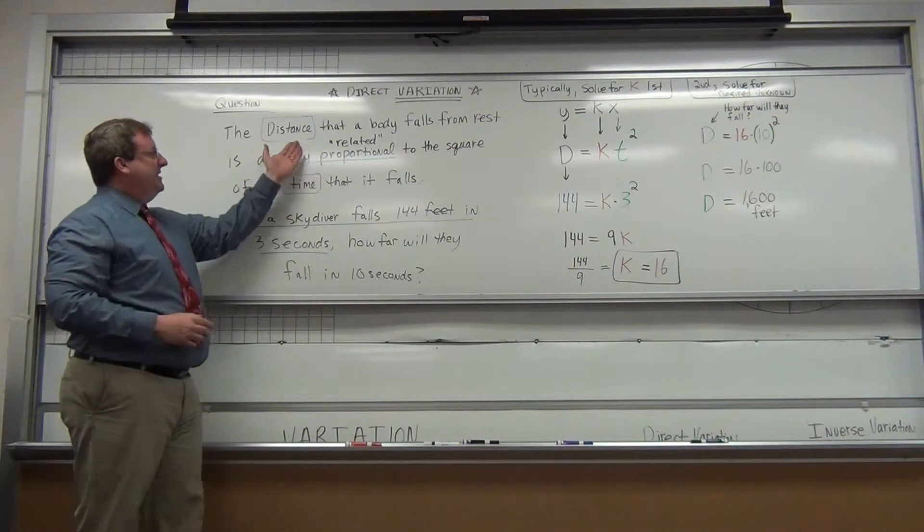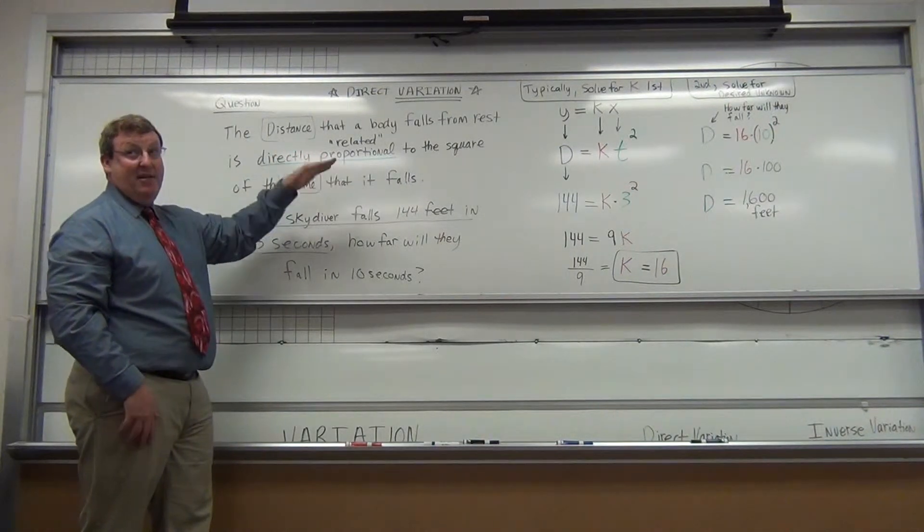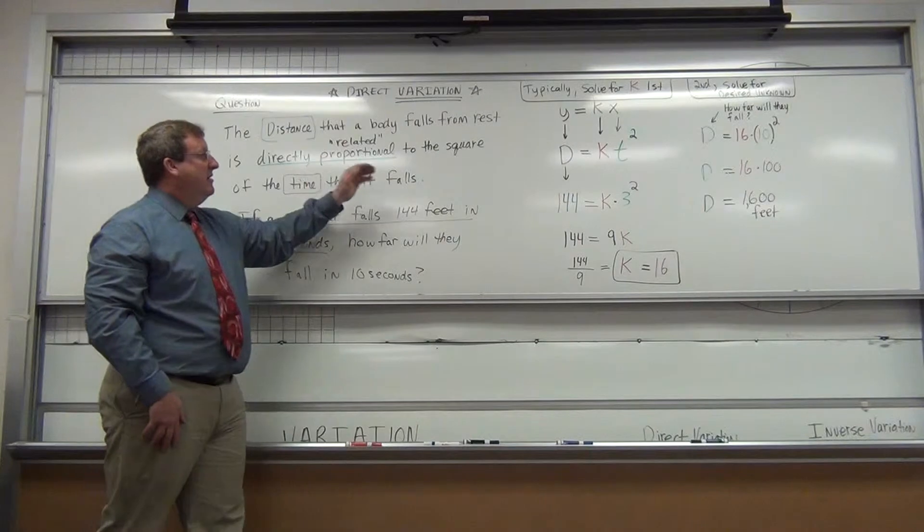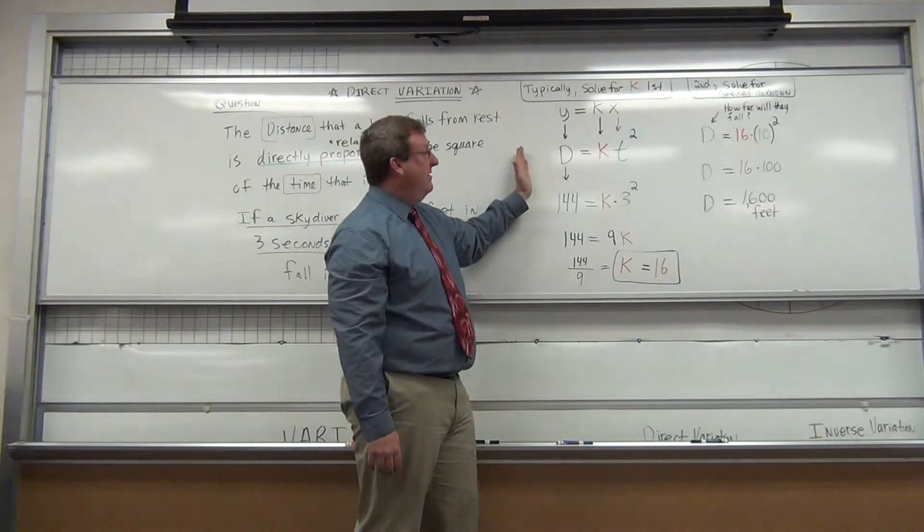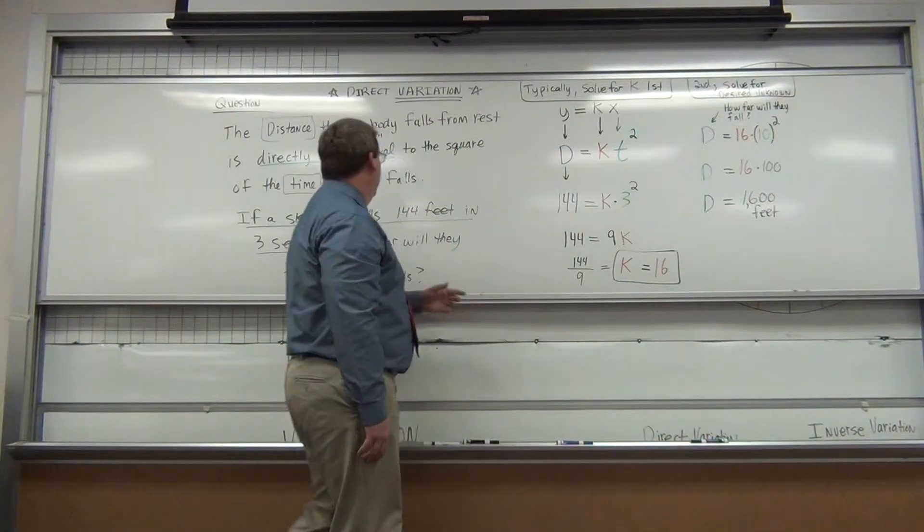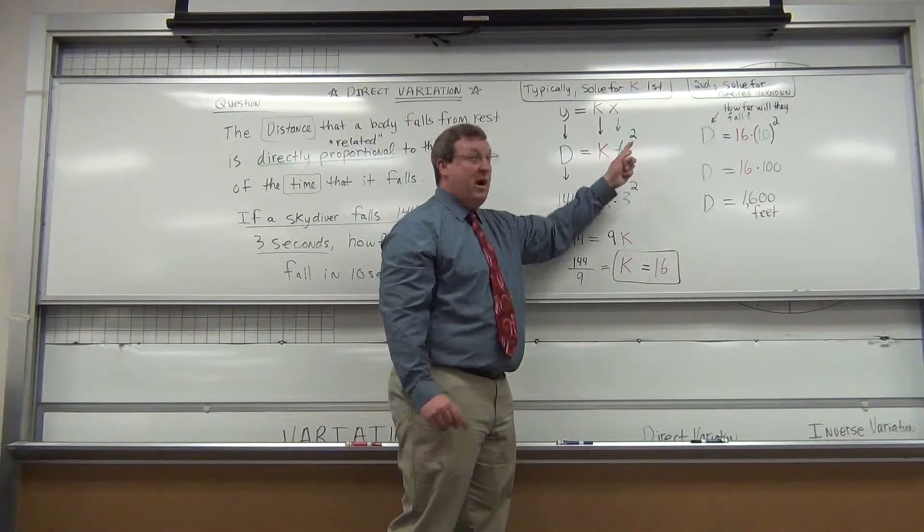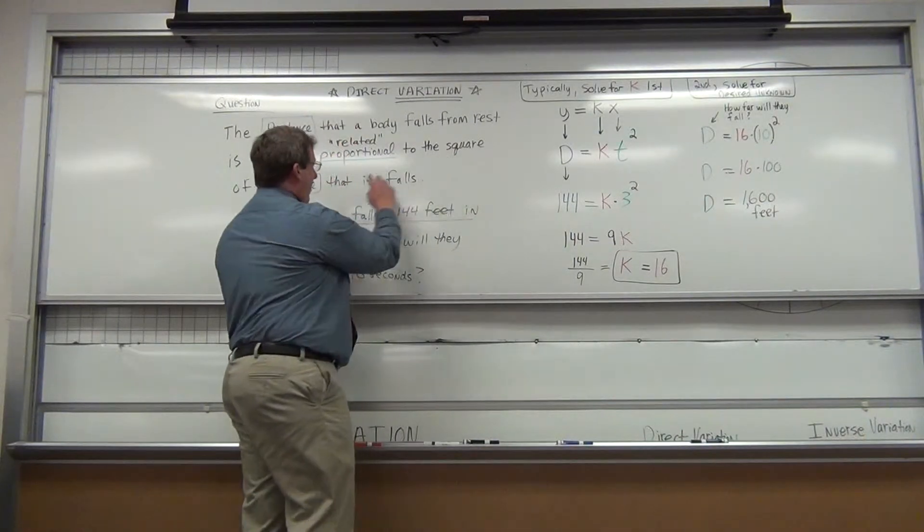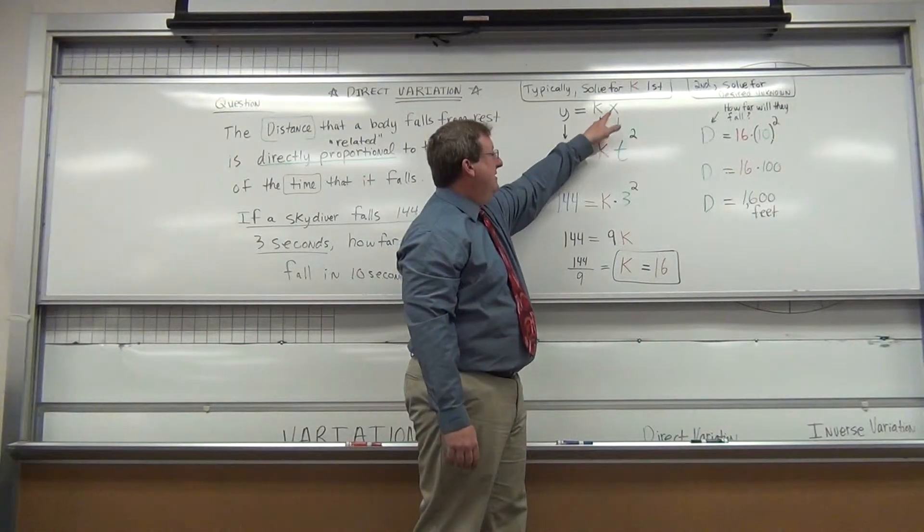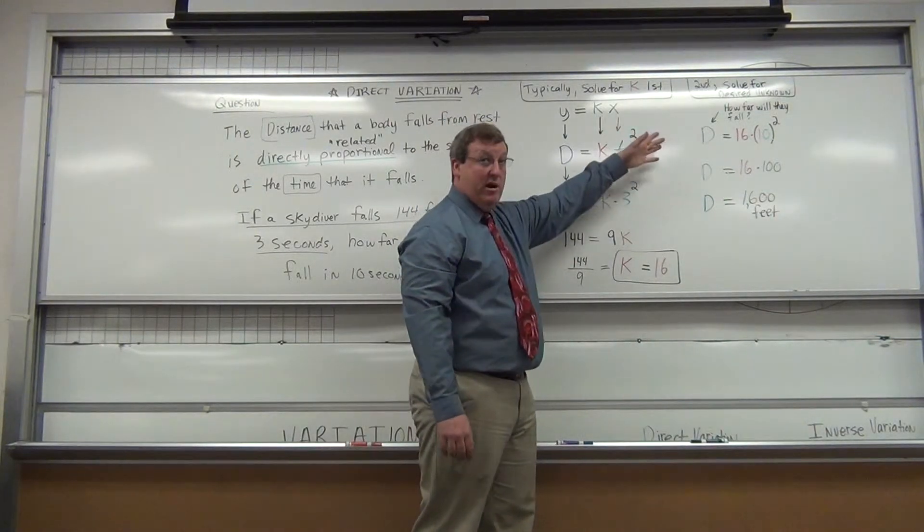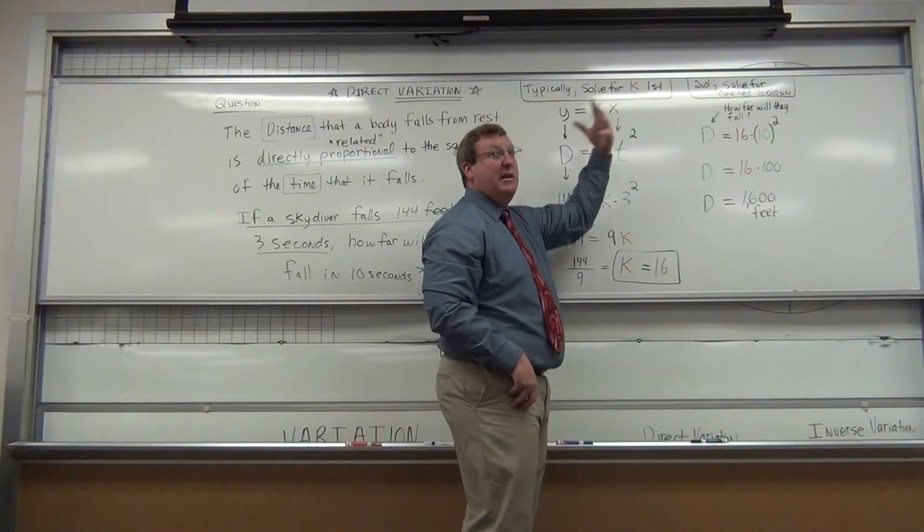We know it's directly related, so we have a formula that looks like y equals kx. Y is my output, x is my input. Now let's apply it to the word problem. The distance is the first thing you see, directly proportional to the square of the time. So y is going to be my d, the thing on the left side, equals k times the time that's falling. That's time squared. That's where a lot of people make the mistake—the square of the time. Make sure your input t is squared. It's okay to have different variables, but t is your time, your input variable.